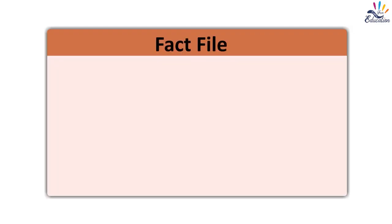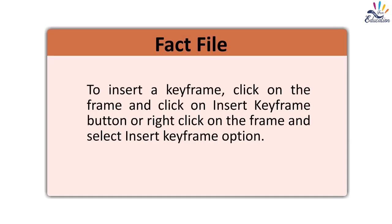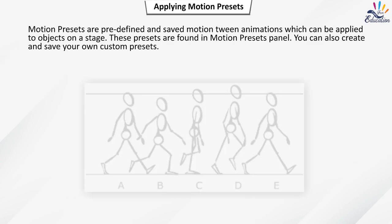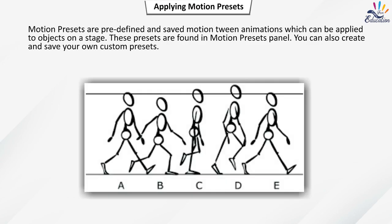Fact file: to insert a keyframe, click on the frame and click the Insert Keyframe button, or right-click on the frame and select Insert Keyframe. Motion presets are predefined and saved motion tween animations which can be applied to objects on a stage.